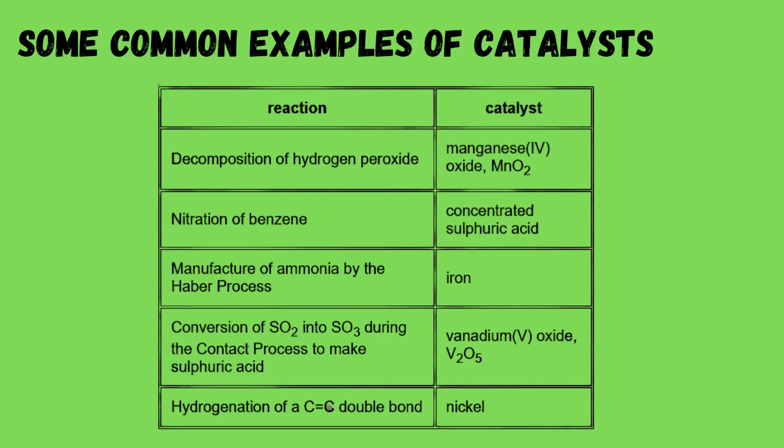Common examples of catalysts include: decomposition of hydrogen peroxide — manganese(IV) oxide (MnO₂); nitration of benzene — concentrated sulfuric acid; manufacture of ammonia by the Haber process — iron; conversion of SO₂ into SO₃ during the contact process to make sulfuric acid — vanadium(V) oxide (V₂O₅); and hydrogenation of a carbon-carbon double bond — nickel.